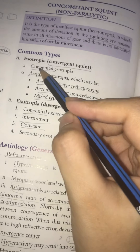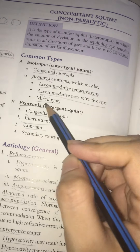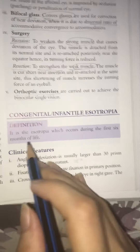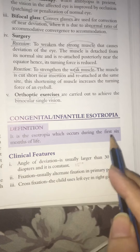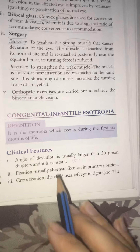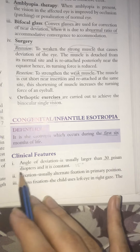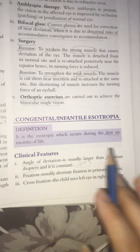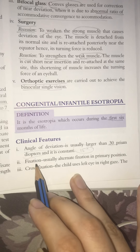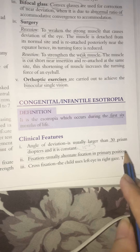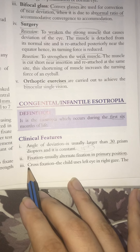We have seen the types of esotropia — congenital and acquired — and exotropia. For congenital esotropia, onset is within the first 6 months of life. The angle of deviation is usually large, around 30 prism diopters (about 15 degrees), with alternate or cross fixation patterns.